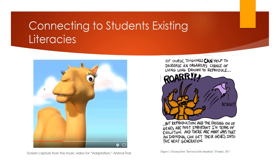That song is 'Adaptation' by the group Animal Tracks. It is really fun — it's definitely from someone who's super fluent in the discourse of rap, and I really love this song. In contrast, we also have a comic. This is just one panel, but the comic goes on to discuss 'Survival of the Sneakiest' — it talks about different ways that behaviors can be evolutionarily fit, because it's not about being strong, it's about having babies. The visuals really help students understand the concept in a medium they already enjoy.